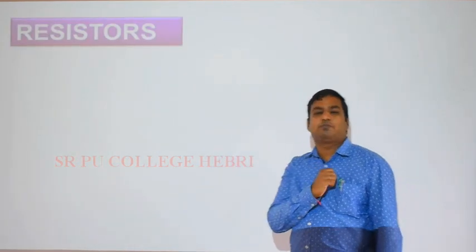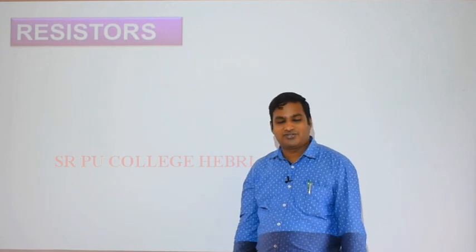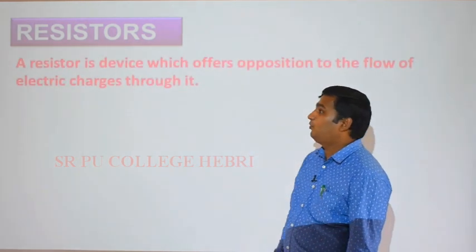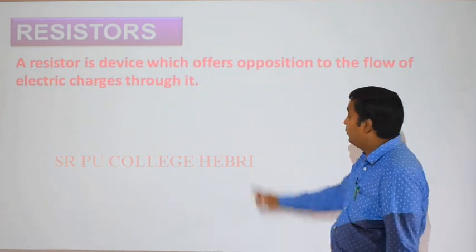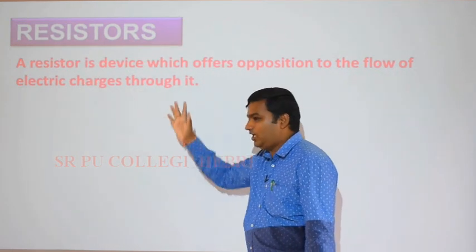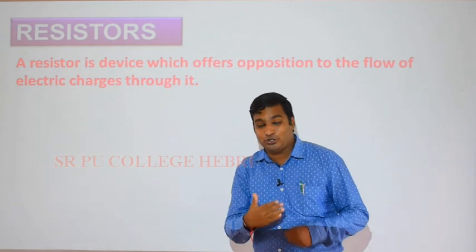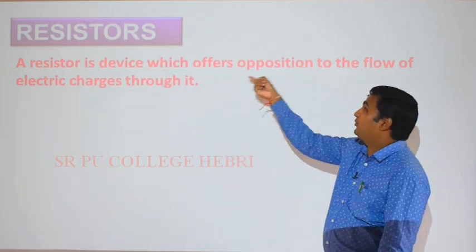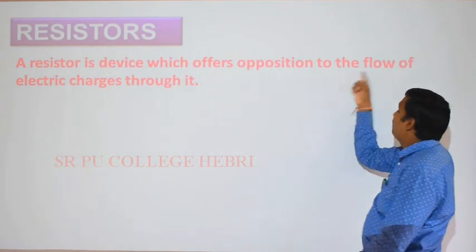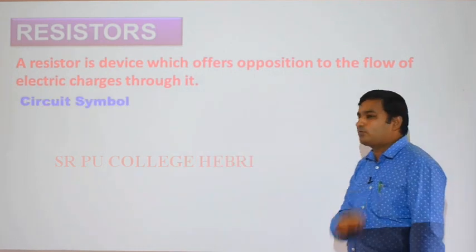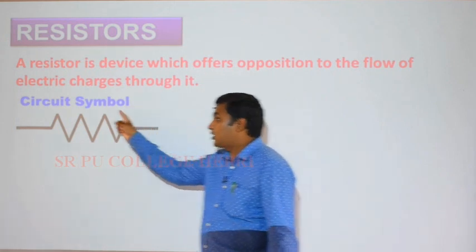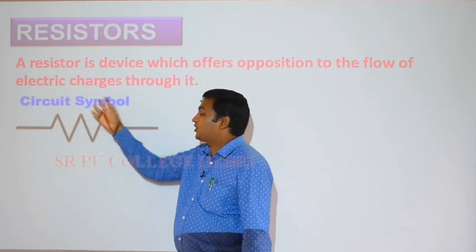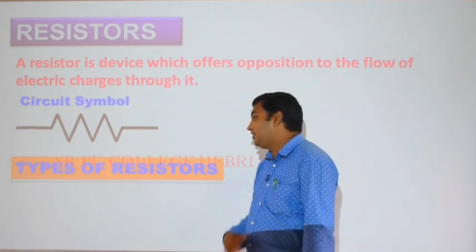A resistor is a device which offers opposition to the flow of electric charge through it. The circuit symbol for a resistor is a specific symbol used in electric network diagrams. There are different types of resistors — the first important type is called the carbon composition resistor, which is widely used in different electric circuits such as TV and computer circuits.